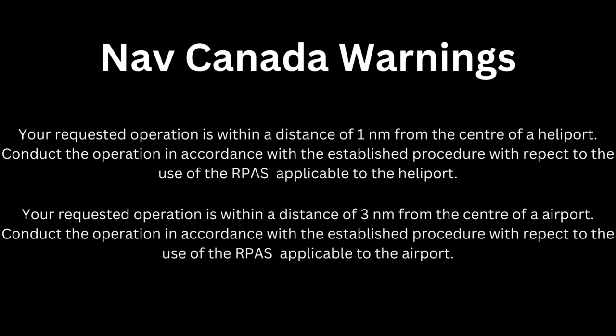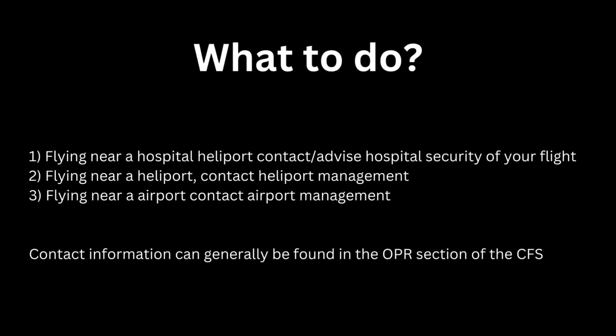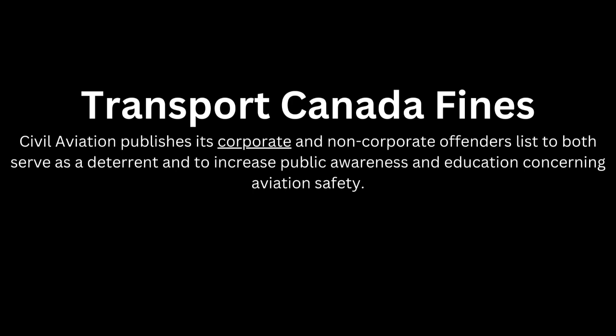Let's look at some standard Nav Canada warnings you may see. The first: 'Your requested operation is within a distance of one nautical mile from the center of a heliport — conduct the operation in accordance with the established procedure with respect to the use of the RPAS applicable to the heliport.' The second: 'Your requested operation is within a distance of three nautical miles from the center of an airport — conduct the operation in accordance with the established procedure applicable to the airport.' If flying near a hospital or heliport, contact and advise hospital security; for a generic heliport, contact heliport management; for an airport, contact airport management. Contact information can generally be found in the OPR section of the CFS.